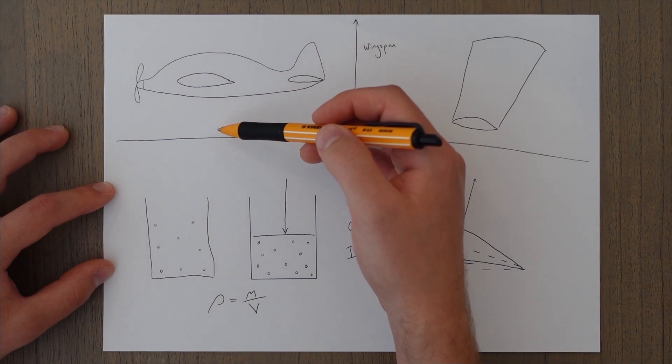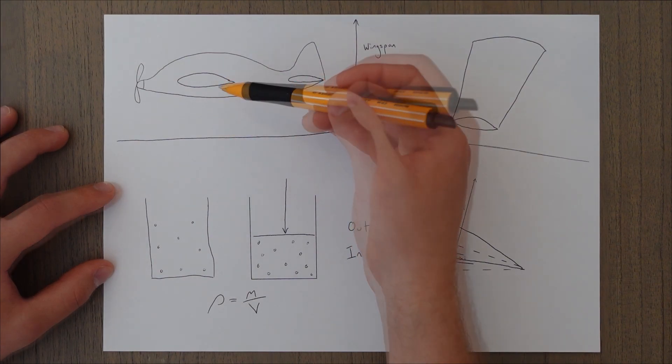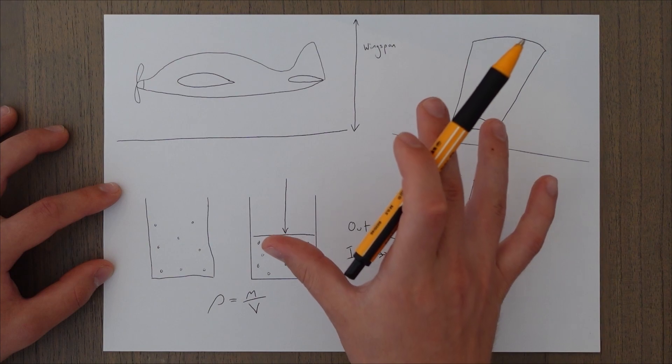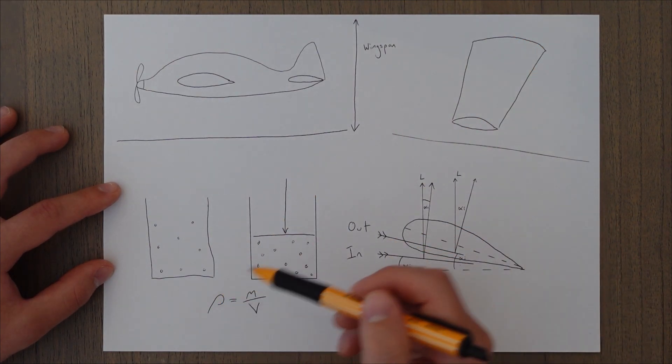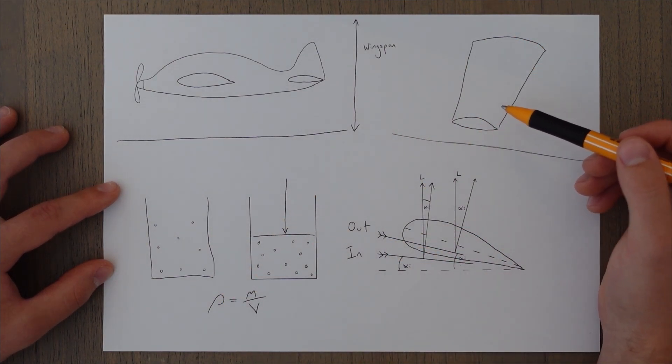There's two parts that make up the ground effect, there's the ram effect, and the physical blocking of the wingtip vortices, and that reduction in downwash.